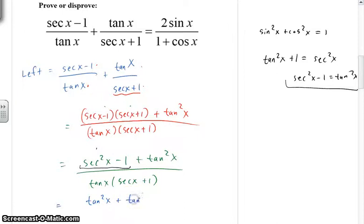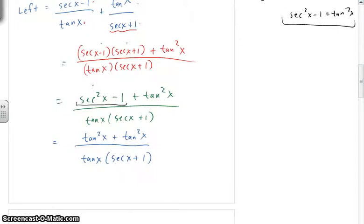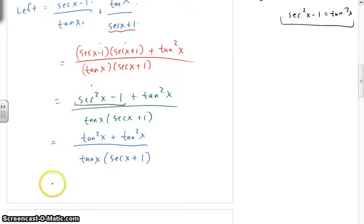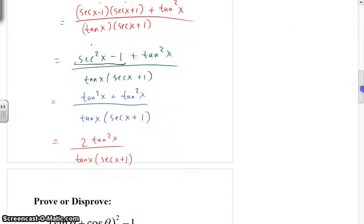So I have tangent squared x plus tangent squared x over tan x times secant x plus 1. And then I have 2 tangent squared x up there, so that's 2 tangent squared x over tan x secant x plus 1. And I don't know, is the 2 good? Well, I see a 2 here, so it seems like that might be good.